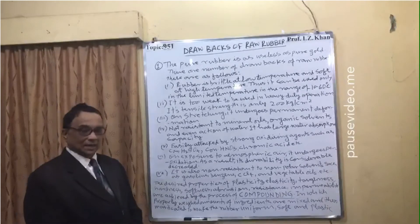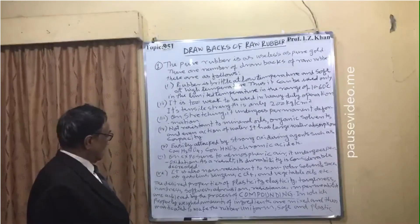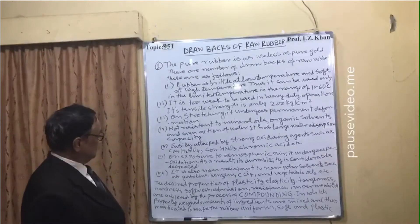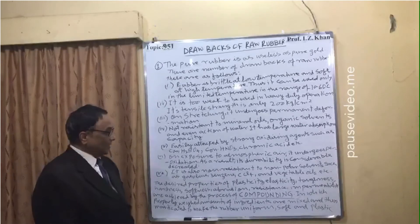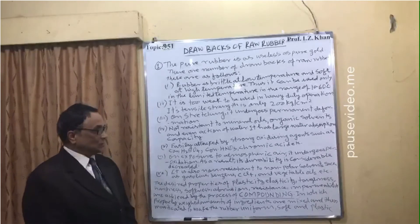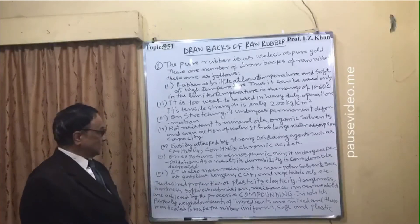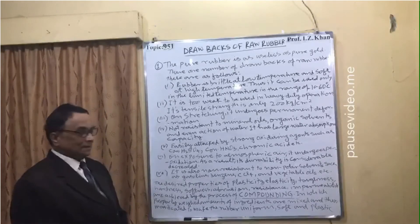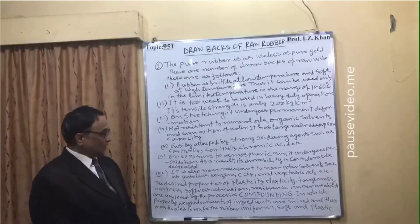Drawback six: on exposure to atmospheric air, raw rubber undergoes peroxidation, as a result its durability is considerably decreased. Drawback seven: it is also non-resistant to non-polar solvents such as gasoline, benzene, carbon tetrachloride (CCl₄), and vegetable oils.